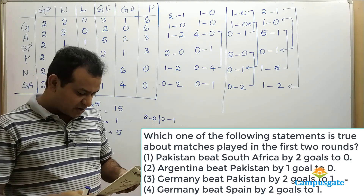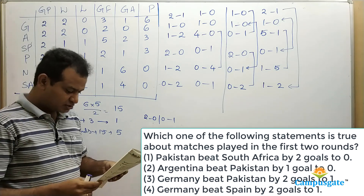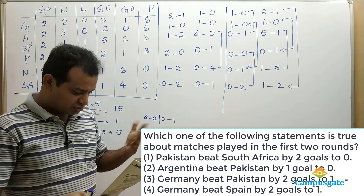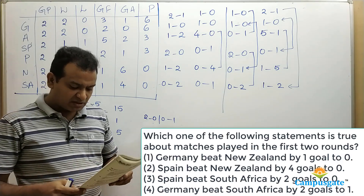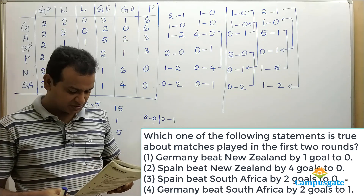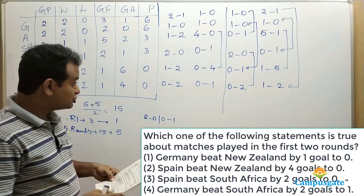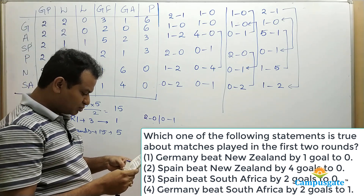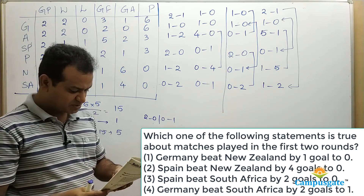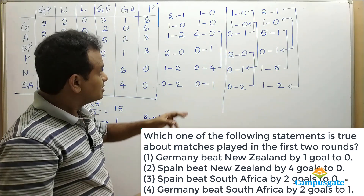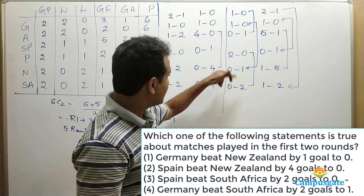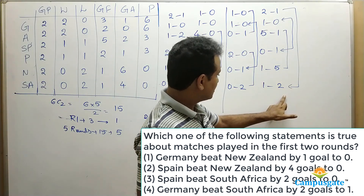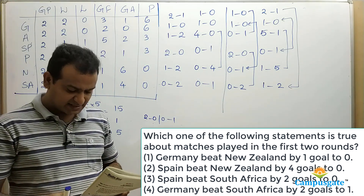Looking at the first question — 'Which of the following statements is true about the first two rounds?' — Pakistan beat South Africa by 2-0, which is true, so the answer to the first question is option 1. For the second question: Germany beat South Africa by 2-1, which is confirmed from our arrangement, making option 4 the correct answer. Other options like 'Germany beat New Zealand' or 'Spain beat New Zealand 4-0' are ruled out.